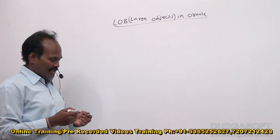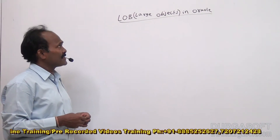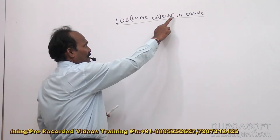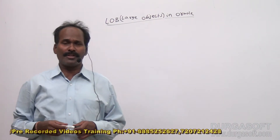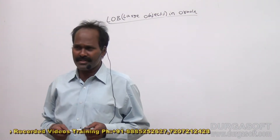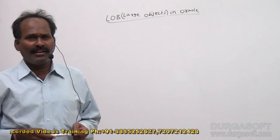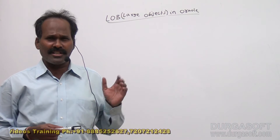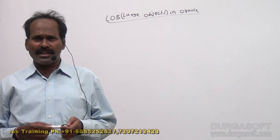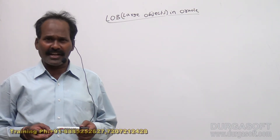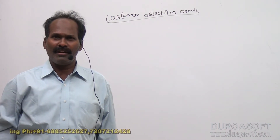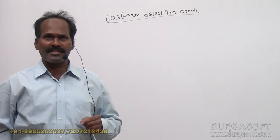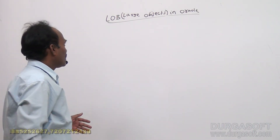The next topic to be discussed in Oracle is large objects. As part of data types in previous video sessions, we have discussed predefined types. Apart from those predefined types like character, varchar, number, date, timestamp, and interval, we have given an introduction to large objects. Now we are going to discuss them in detail.